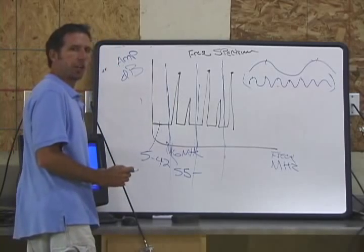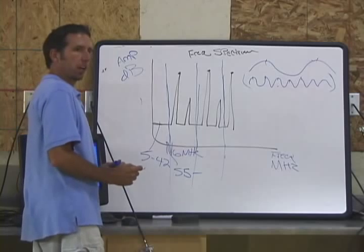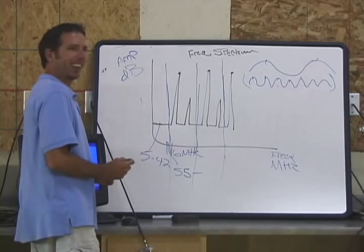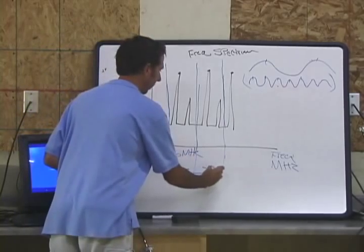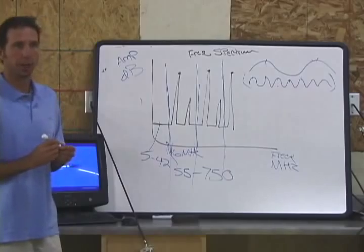And then when your TV channels start, it is at 55 and it goes to whatever your system is. What's your system here? 750? Sure. 750 megahertz. Do you know which highest channel? 107. It's probably 750 megahertz.